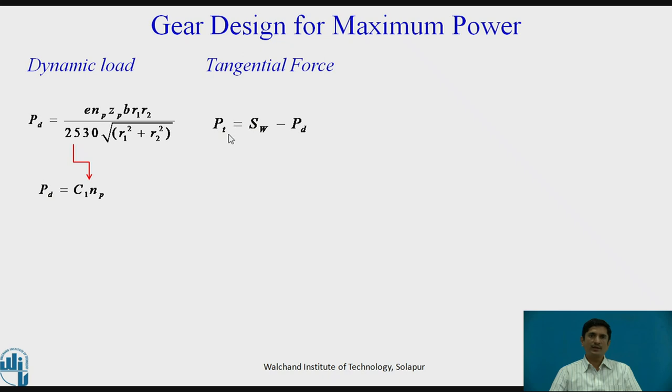Tangential force, we have already calculated it as PT equals SW minus PD. If I put this value of PD in the equation of tangential force, I can get PT equals SW minus C1 NP. Then if I want to get the power, I need to get the torque. But right now, I have only the force, tangential force.